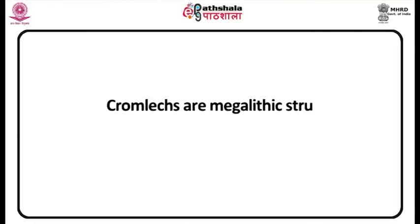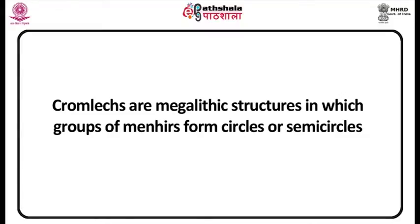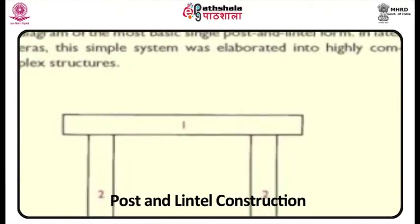Cromlechs, from the Celtic word for a circular place, are megalithic structures in which groups of menhirs form circles or semicircles. The most famous Neolithic cromlech in Western Europe is Stonehenge, which was built in several stages from roughly 2800 to 1500 BC. Rising dramatically from Salisbury Plain in southeastern England, Stonehenge is a series of concentric circles and horseshoe or U-shaped curves. Before moving to Stonehenge, let me share a visual about post and lintel construction.